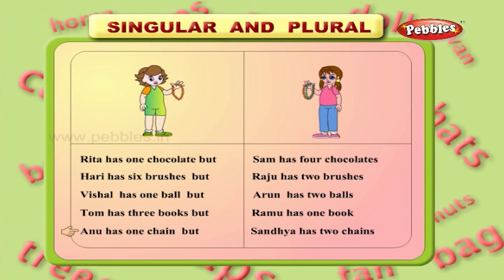Anu has one chain, but Sandhya has two chains.